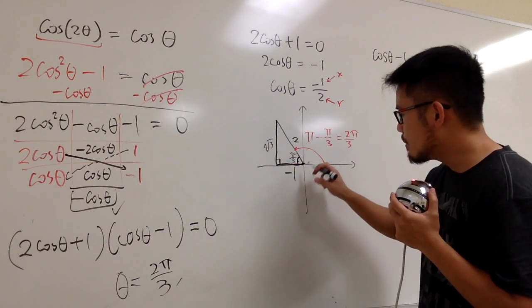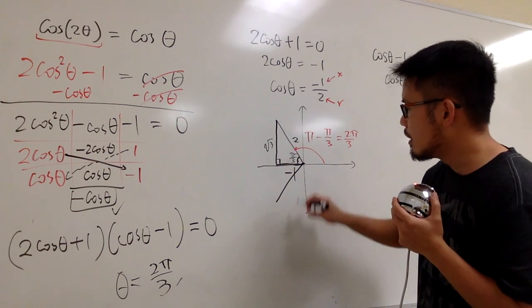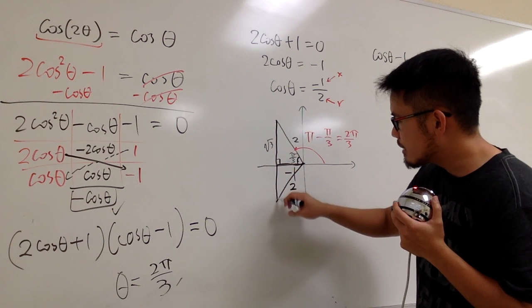But then, this time, I will draw my hypotenuse, which is still 2, this way down below. This is 2. And then, we're talking about this triangle here.